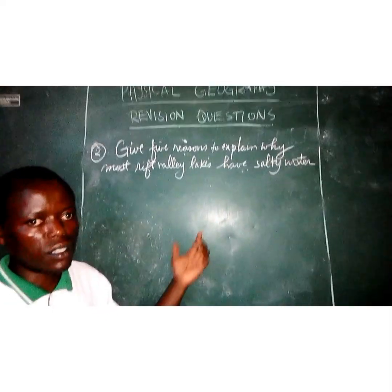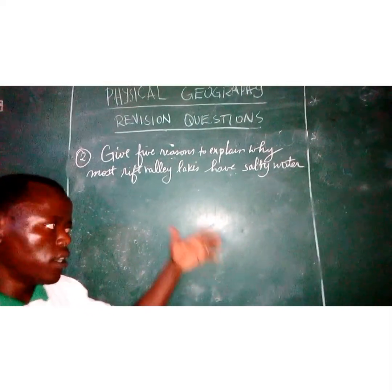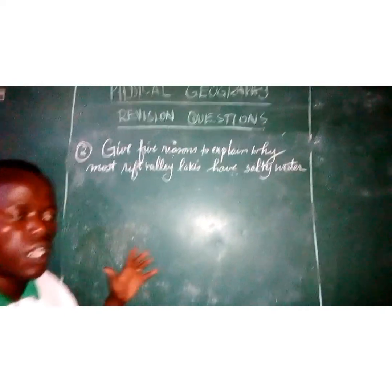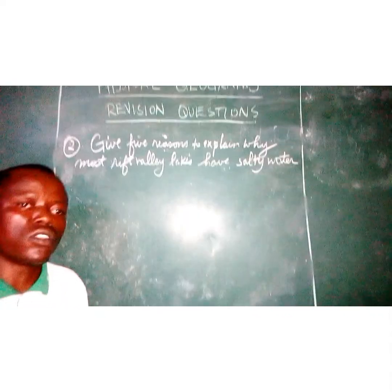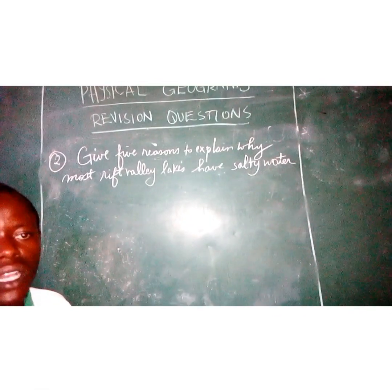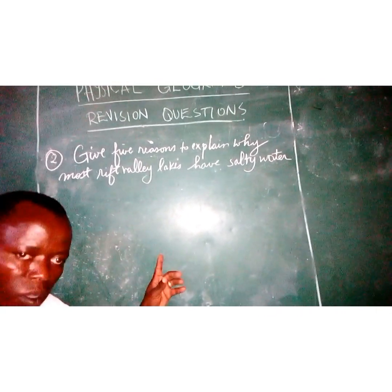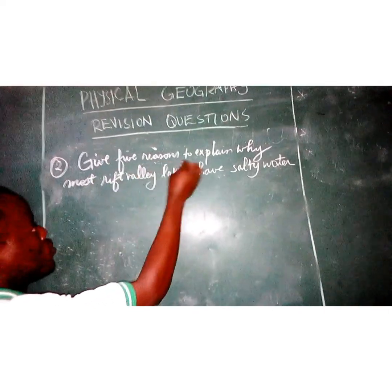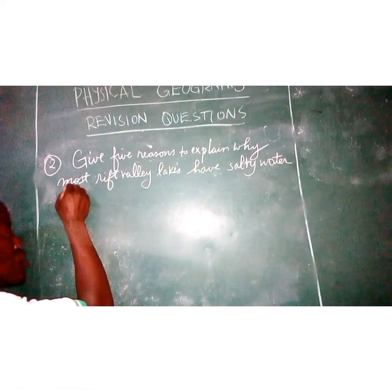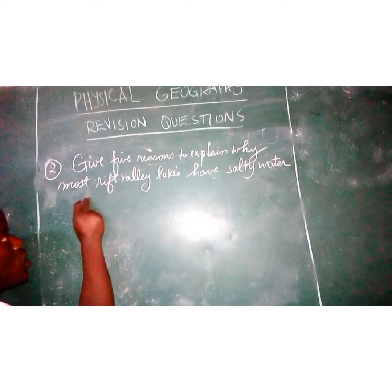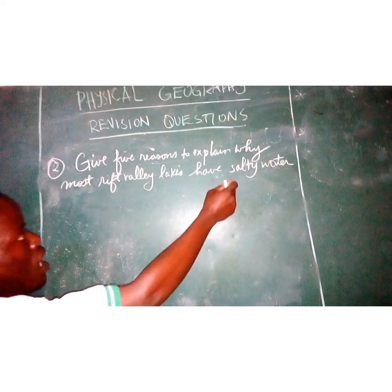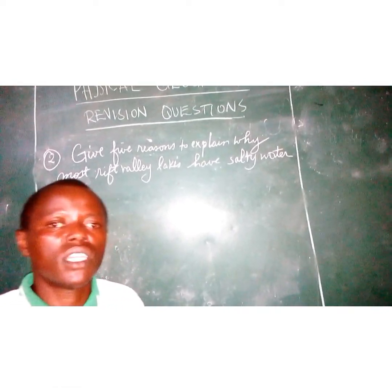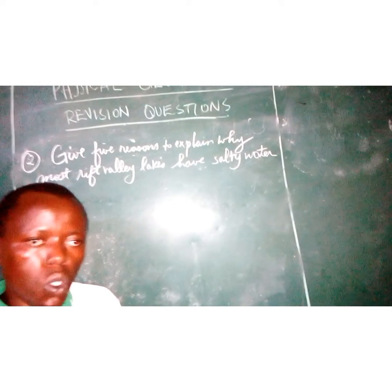Welcome to physical geography. We are still on television. In the previous episode we were talking about the question asking to give the reasons why some of rift valley lakes have fresh water. Now we are going to look at another question: give five reasons to explain why most rift valley lakes have salt water.